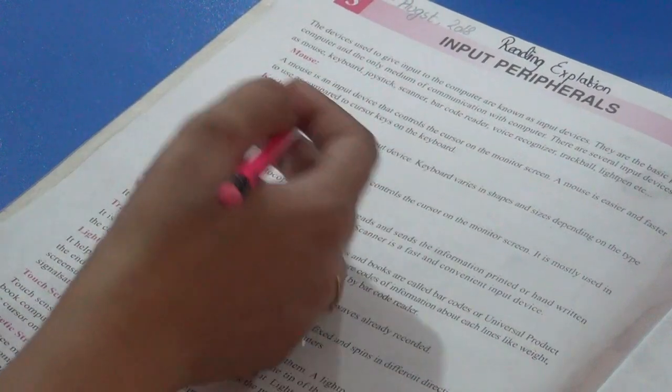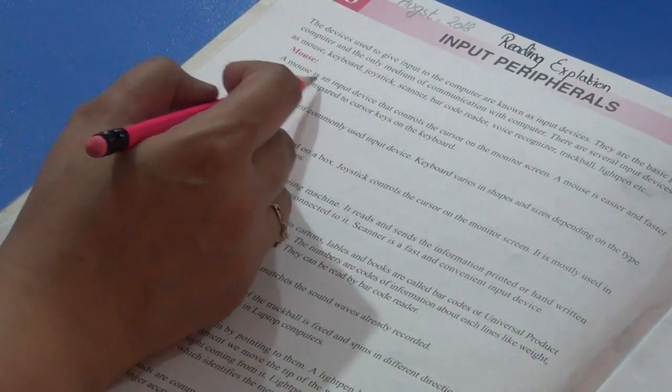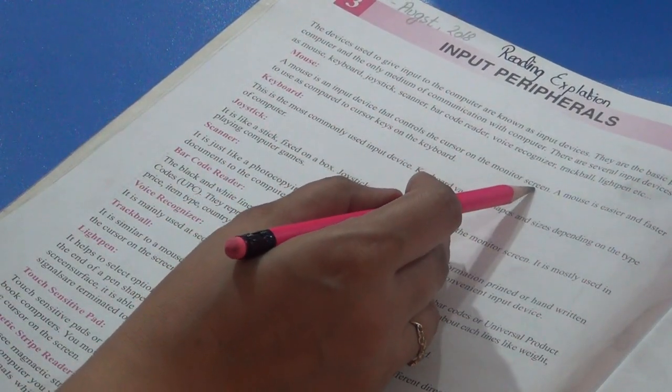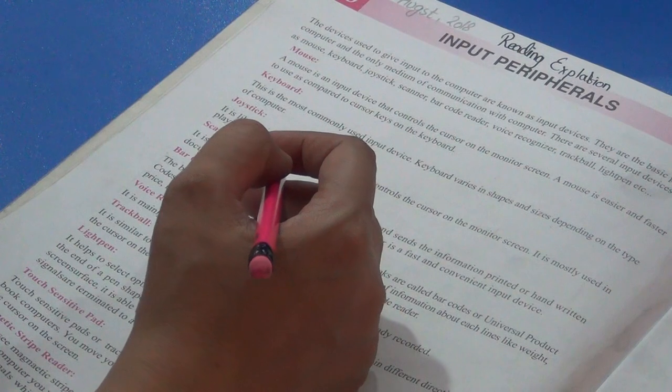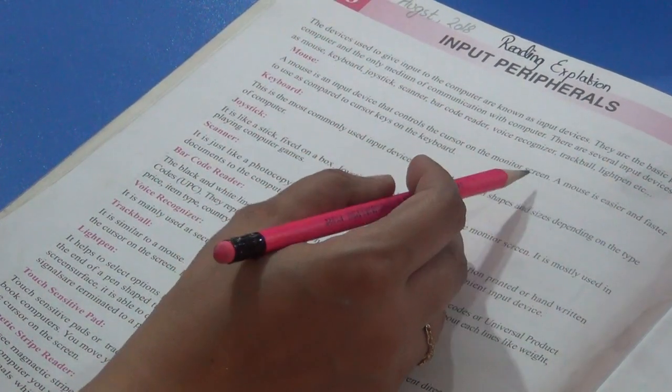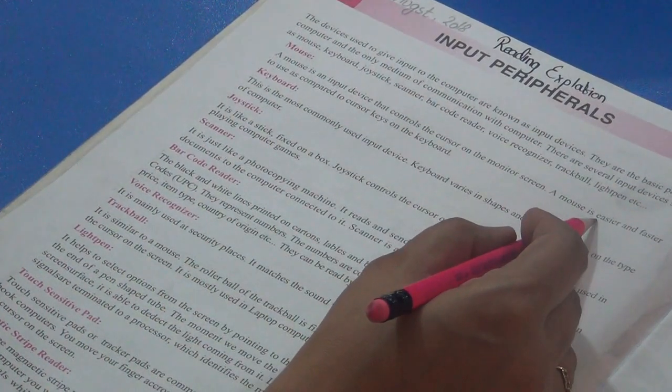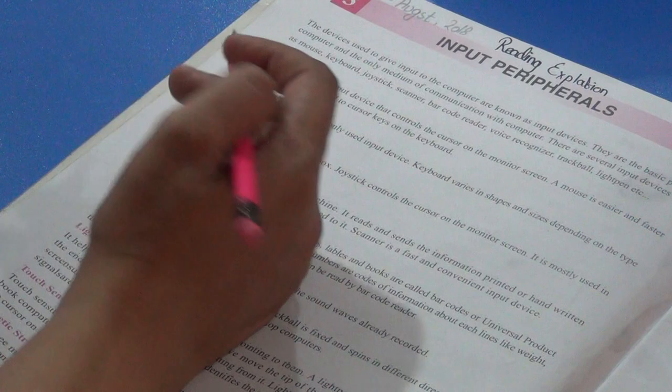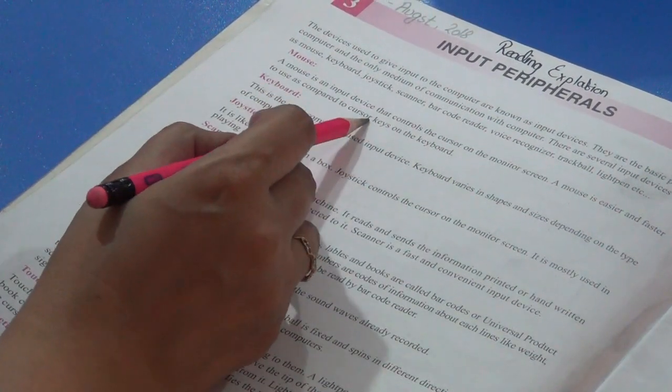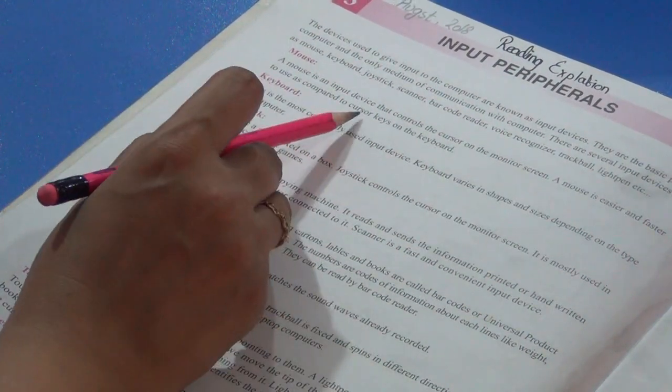Number 1 is mouse. Now we have explanation of these input devices. A mouse is an input device that controls the cursor on the monitor screen. It helps us control and move the cursor on the screen. A mouse is easier and faster to use as compared to cursor keys on the keyboard. If you want to do the same work with keyboard cursor keys, it will be difficult. Now second input device is keyboard.